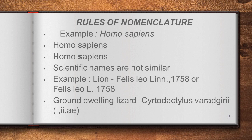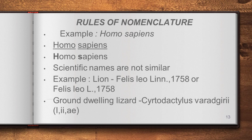Another rule: the scientist who first publishes the name can use their own name as the species name. For example, Cyrtodactylus is a scientific name for a newly discovered ground-dwelling lizard, found by Varadaraju. Its scientific name is Cyrtodactylus varadarajui. However, when a discoverer's name is used, the ending must include either a single 'i', double 'i', or 'ae'.